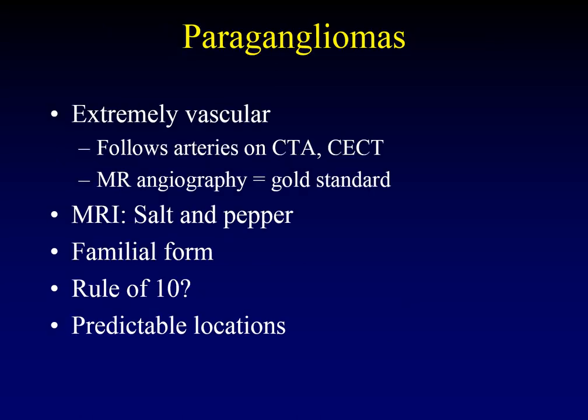Let's talk about paragangliomas. Paragangliomas are a family of tumors that share histology but occur in various places around the body. They are extremely vascular tumors — so vascular that they are essentially the same density as arteries when seen on CT angiography or on contrast-enhanced CT. MR angiography is now considered the gold standard for identifying small paragangliomas.